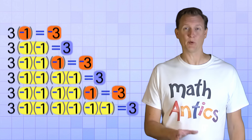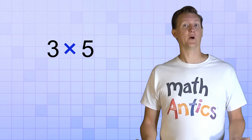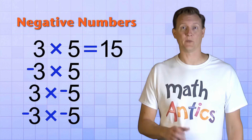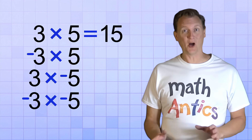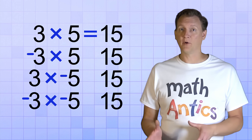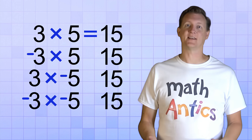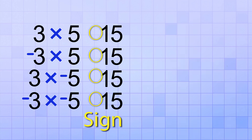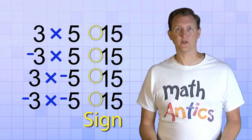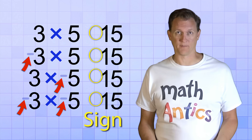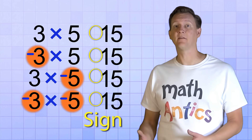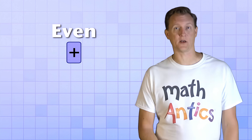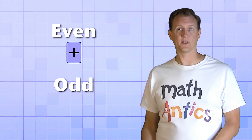Let's look at the simple problem 3 times 5. We know the answer is 15, but thanks to negative numbers, there are 3 more variations of this problem. We'll get the same number for the answer in all four problems — it's just that the sign, whether positive or negative, will differ based on how many negative factors we're multiplying. When doing integer multiplication and division, you can just pretend the negatives aren't there while you multiply or divide, then count up how many negative factors you have to figure out the sign. Even number of negatives: positive answer. Odd number of negatives: negative answer.